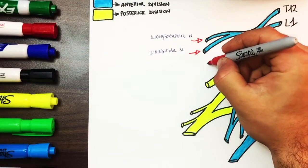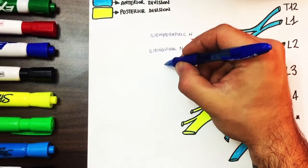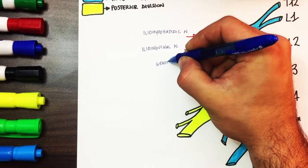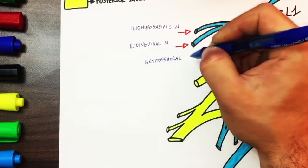The genitofemoral nerve lies right below, it originates from L1 and L2 anterior to the psoas muscle and it will split in the genital branch and the femoral branch which is different from the femoral nerve that we'll see later on.